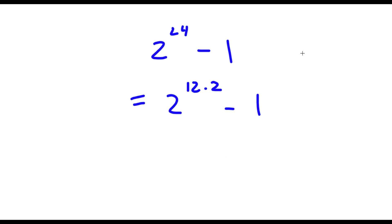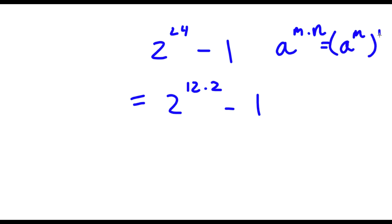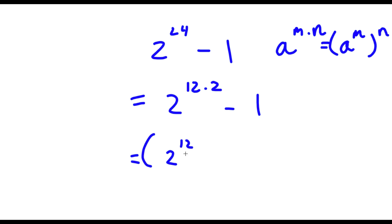Now, if I have something in the form a to the power of m times n, this is the same thing as a to the power of m to the power of n. So 2 to the power of 12 times 2 I can rewrite as 2 to the power of 12, to the power of 2, minus 1.